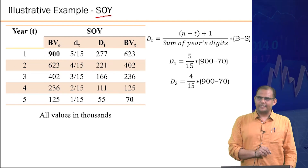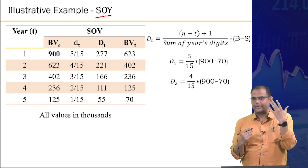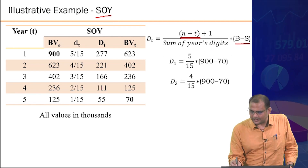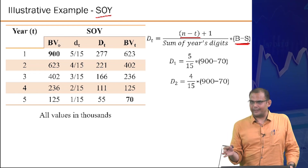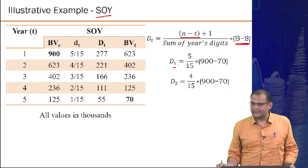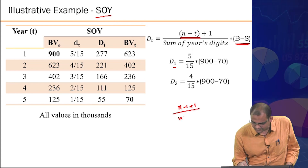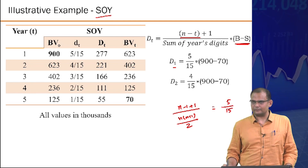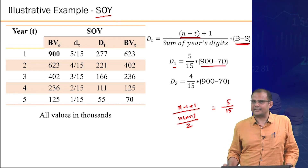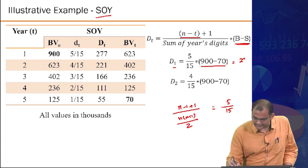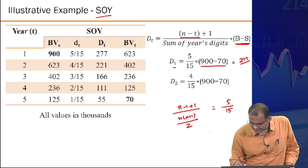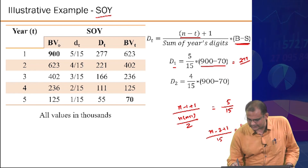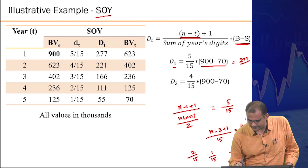Sum of years digits method: fractions are (N minus t plus 1) / [N(N+1)/2]. For N=5, denominator is 15. Fractions are 5/15, 4/15, 3/15, 2/15, 1/15. Total to distribute is 900 minus 70 = 830. Year 1 depreciation: (5/15) × 830 ≈ 277. Year 2: (4/15) × 830 ≈ 221. Year 3: (3/15) × 830 ≈ 166.